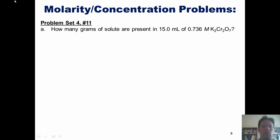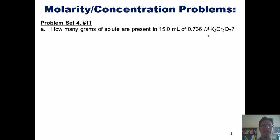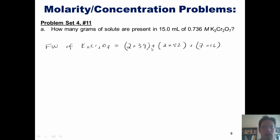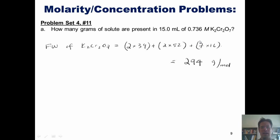Before we get into doing this problem, I have to point out one thing. This problem is asking us to convert 15 milliliters of this solution into grams. We've seen in our previous examples that we can use molarity — moles per liter — to interconvert between volumes and moles. But to interconvert between moles and grams, we use formula weight, as we learned in an earlier chapter. So before I even start the dimensional analysis, I'll calculate the formula weight of potassium dichromate, K₂Cr₂O₇. Each potassium atom weighs 39 — times 2 — plus chromium at 52 with 2 of those, plus oxygen at 16 with 7 of those. The total formula weight of potassium dichromate is 294 grams per mole.